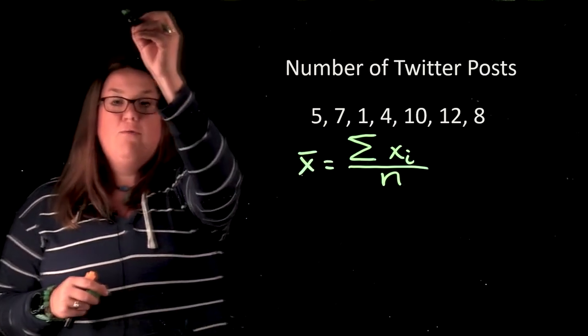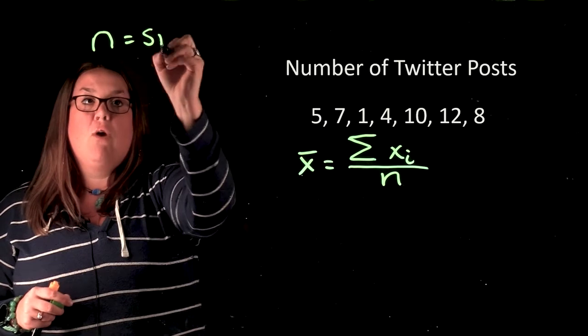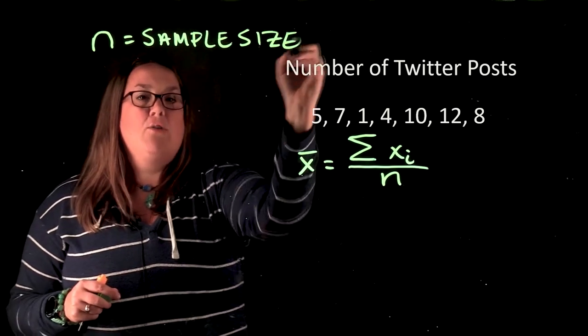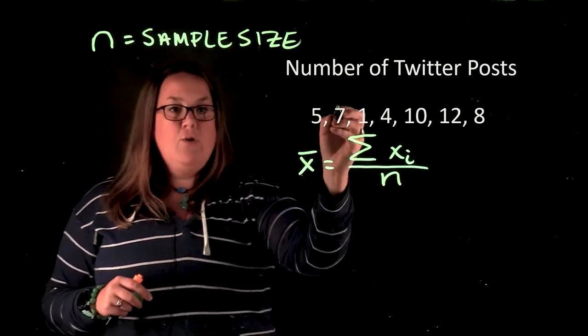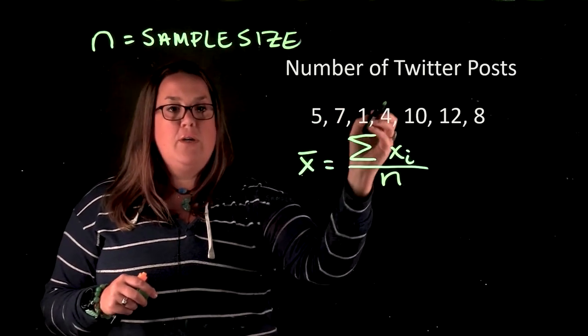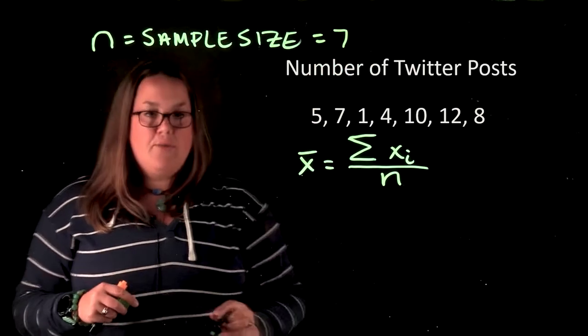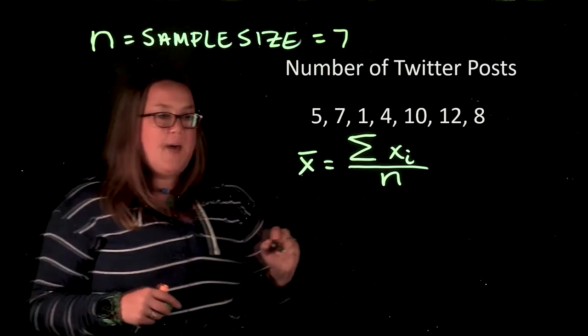n is the notation for sample size, so how many observations are there in the data set? Well, here you can see we have one, two, three, four, five, six, seven, so our sample size or n for this particular data set is going to be seven.